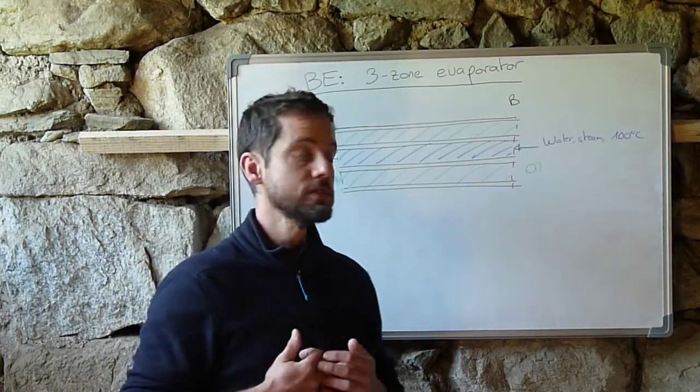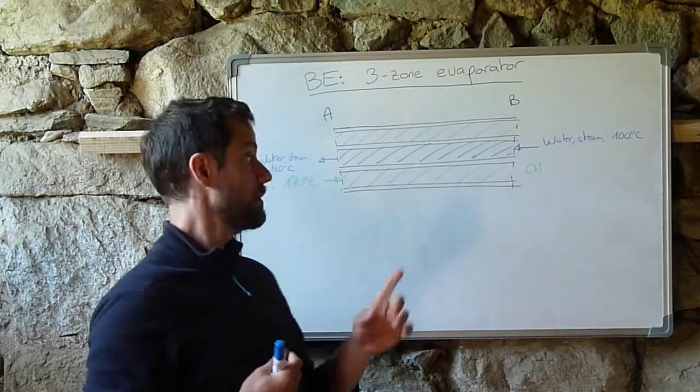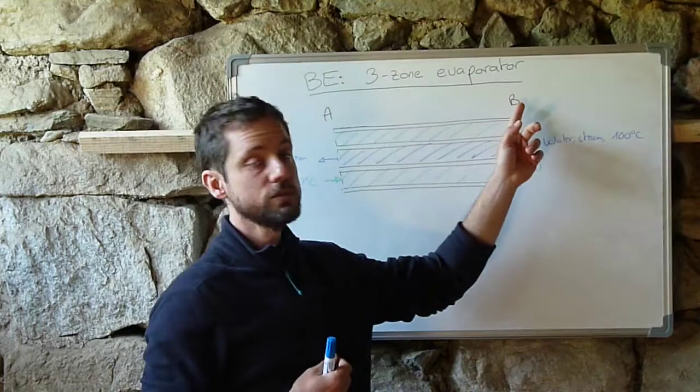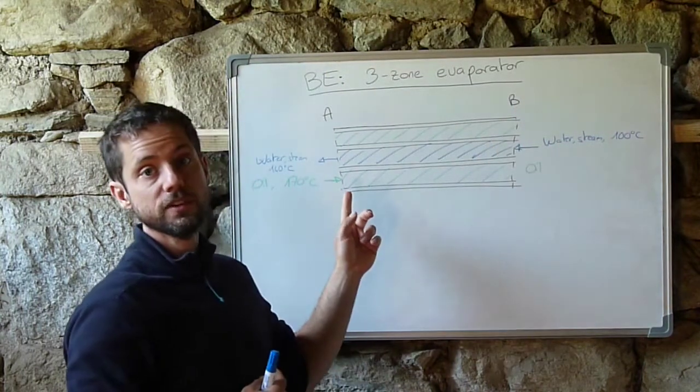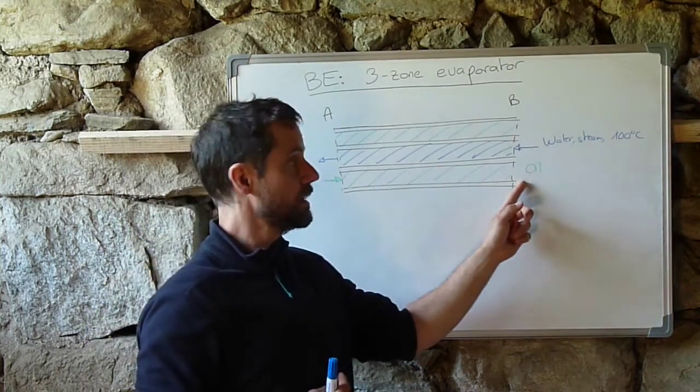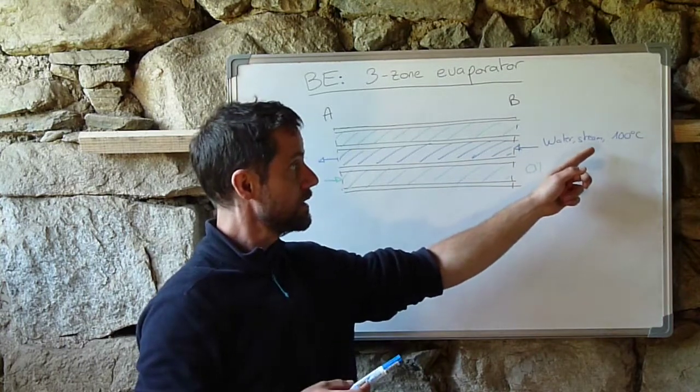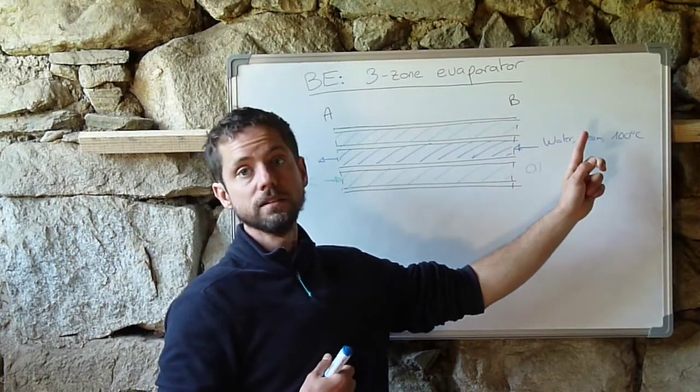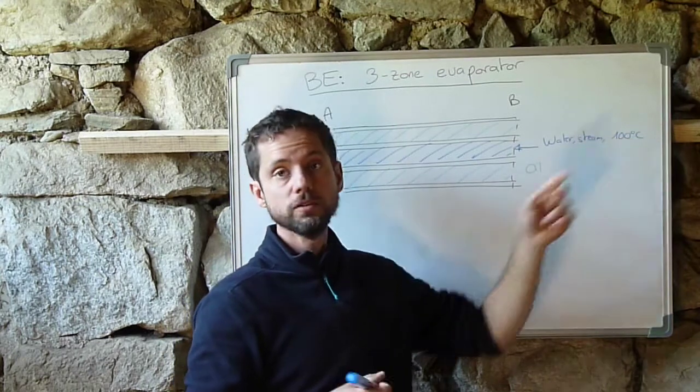So here, I'm just showing what we have to do if we consider the section between A to B. So that's the first section for the oil that is entering at 170 degrees, and that's the last section for the water that is entering as a saturated steam or vapor at 100 degrees Celsius.